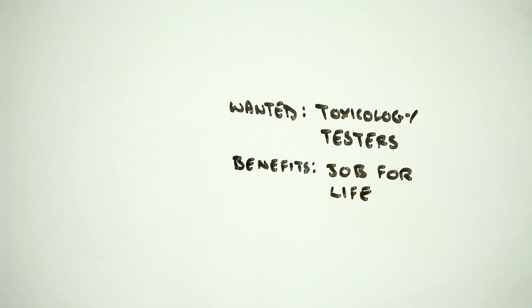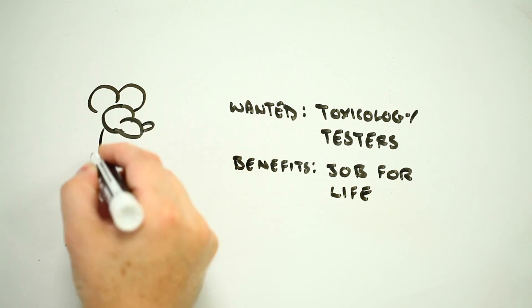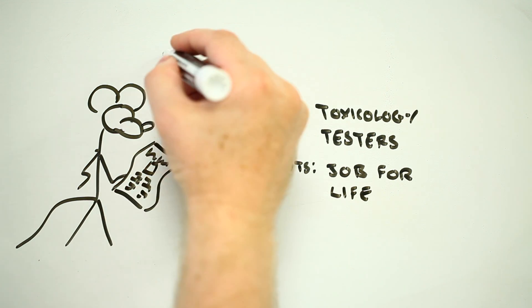This is why toxicologists use animals and cell cultures and other tests that don't involve people. They use these to explore what's likely to happen in humans. But testing a substance thoroughly still takes a long time, sometimes several years even.